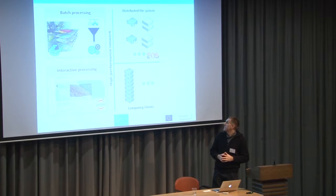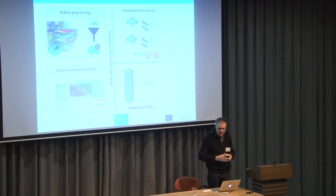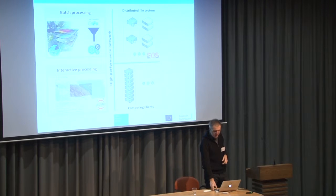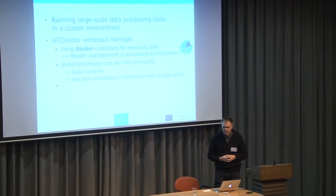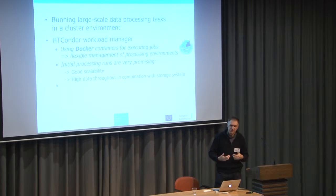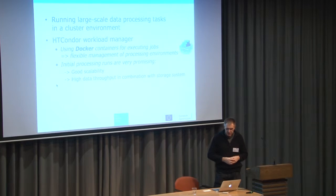These are the components of our infrastructure. One of the core parts, shown on the top right, is the distributed file system — the storage part. This is EOS, the system developed and maintained by CERN, who gave us a lot of support to set it up. We have computation clients and two major types of processing. The low-level batch processing is a classical approach with a workload manager spreading the load over all cluster nodes. We use Docker containers because many projects have their own tools and libraries, and the system scales well with good storage throughput.